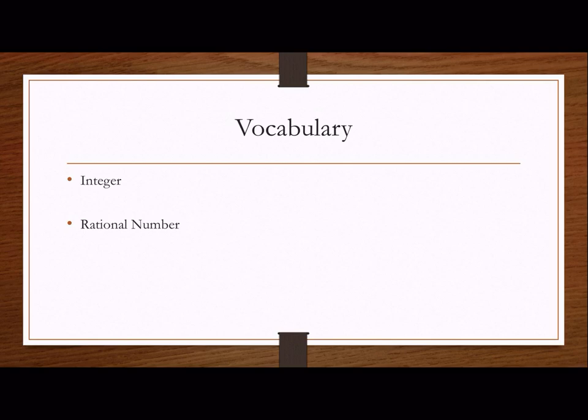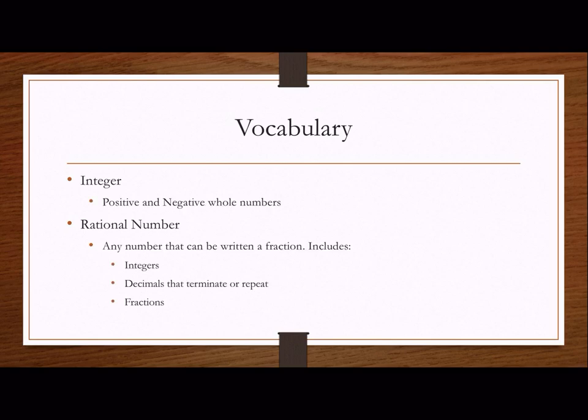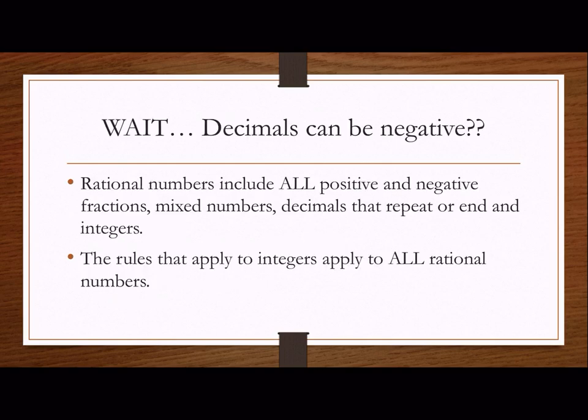Let's talk about some basic vocabulary. An integer is a positive or negative whole number. A rational number is going to be a fraction, a decimal, a mixed number — anything that can be written as a proper or improper fraction, anything that can be written as a ratio of two numbers, and it can be positive or negative. It includes integers, decimals that terminate or repeat, and fractions.